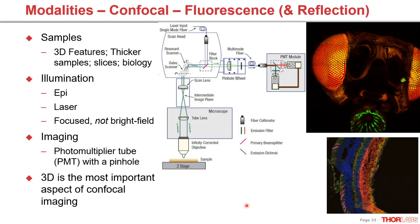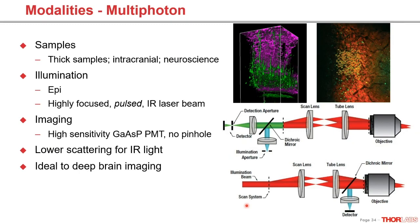Multi-photon is similar to confocal in many ways — it uses a scanning spot and collects photons on higher-sensitivity gallium arsenide PMTs. It uses a highly focused pulsed IR beam to induce fluorescence only exactly at the focal point, so there is no pinhole needed. IR light scatters less as it travels through tissue, skull, and other dense samples, allowing imaging at much greater depths. This will be covered in more detail in a later webinar.